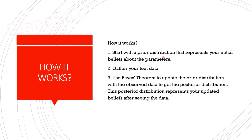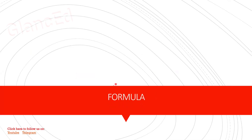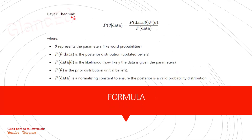How Bayesian Estimation works: first, calculate the probability of the previous data. Then gather new text data. After that, update the probabilities by adding the new data probability to the previous probability. This update is done using Bayes' theorem formula, which is used to estimate the parameters in Bayesian Estimation.